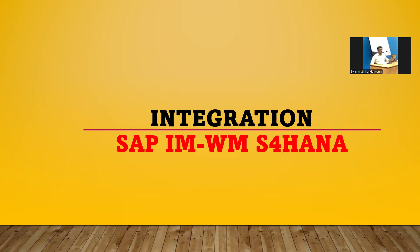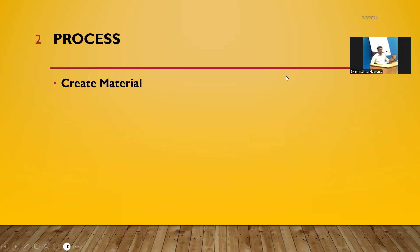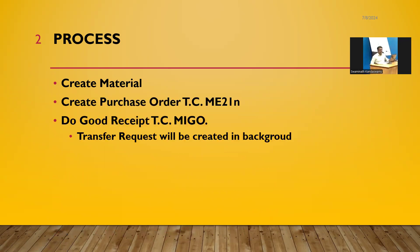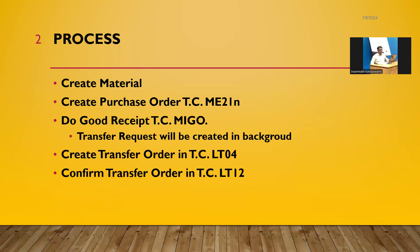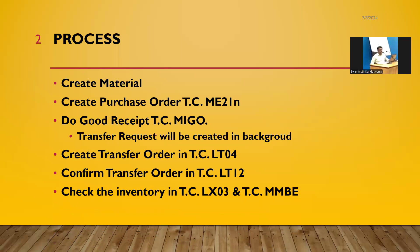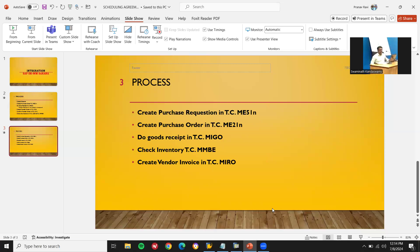Hello everybody, today we are going to see the integration of SAP Inventory Management and Warehouse Management. The processes are: first I'm going to create a material, then create a purchase order using transaction code ME21N, then do goods receipt in MIGO transaction code. Upon doing goods receipt, a transfer request (TR) will be created in the background — that's the warehouse side. Then I'll create and confirm a transfer order in LT12, and finally check the inventory in LX03 from the warehouse side and MMBE from inventory management.